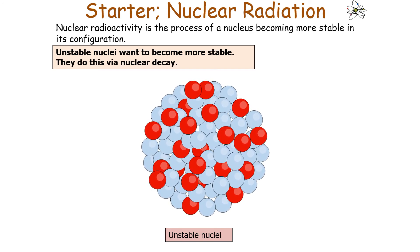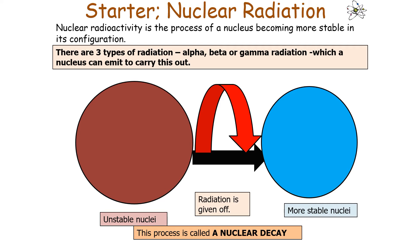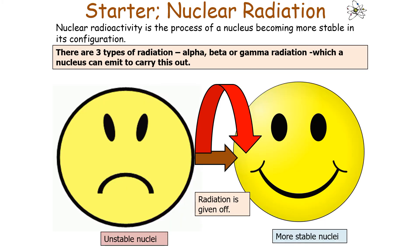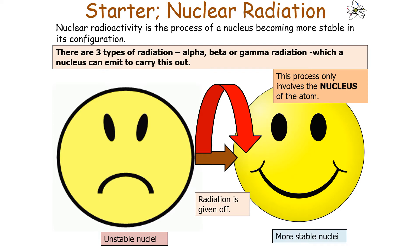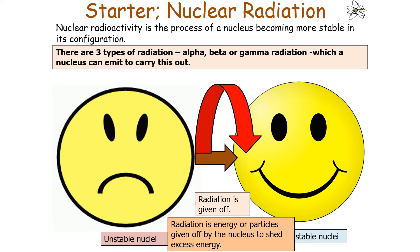All unstable nuclei want to become more stable, and they do this via nuclear decay. There are three types of radiation which a nucleus can emit to become more stable: alpha radiation, beta radiation, or gamma radiation. This process is called nuclear decay — it's called a decay because the nucleus is releasing either particles or energy to become more stable. All nuclear decays are events which increase the stability of the nucleus, so the unstable nucleus will give off radiation and become a more stable nucleus. This process only involves the nucleus of an atom. It's nuclear decay, not atomic decay, so do not use the phrase 'atoms' when considering this decay process. Radiation is the energy or particles given off by the nucleus to shed excess energy.